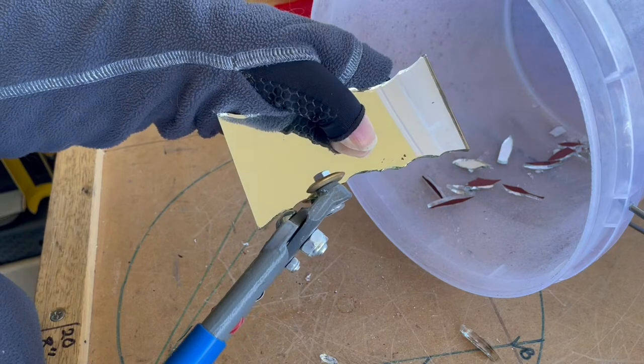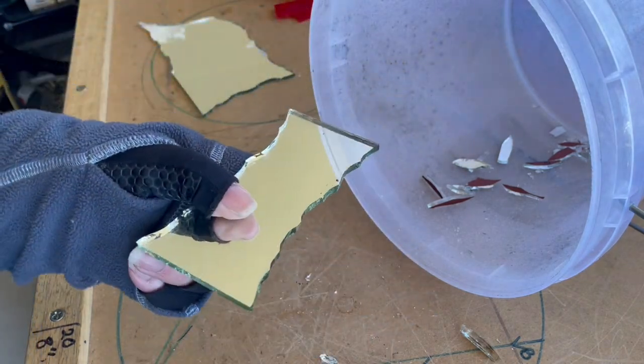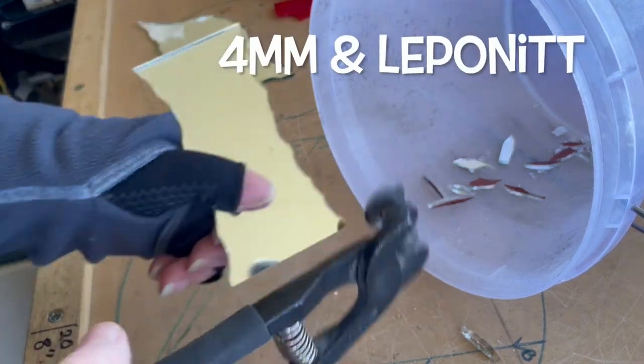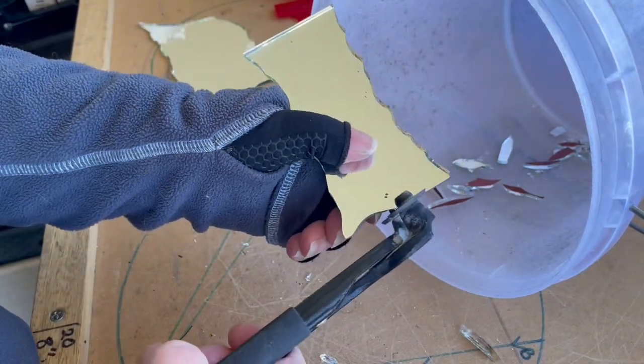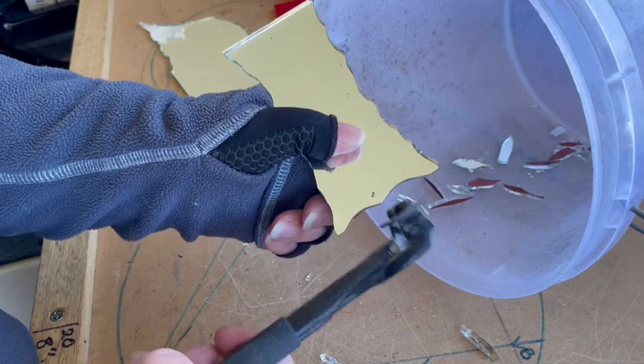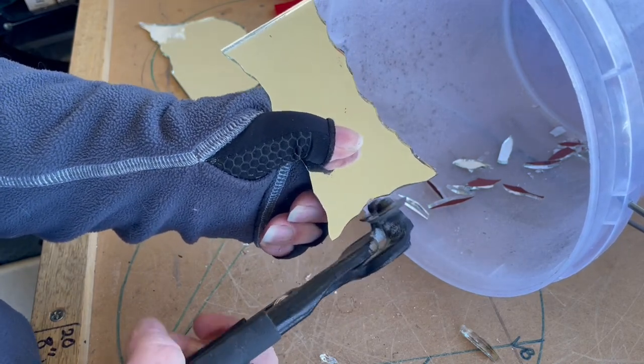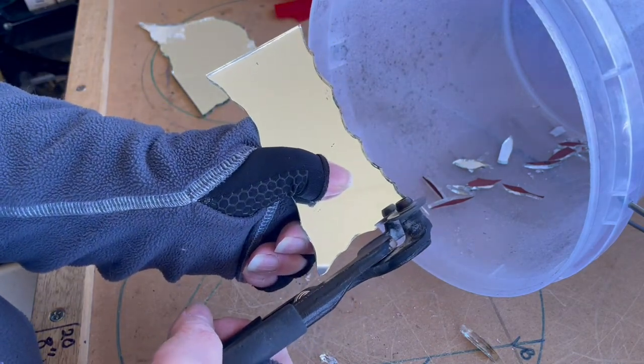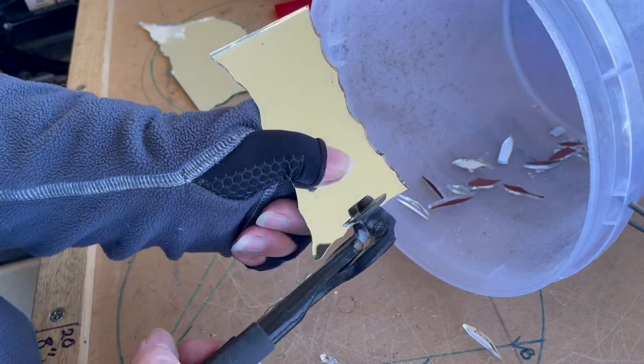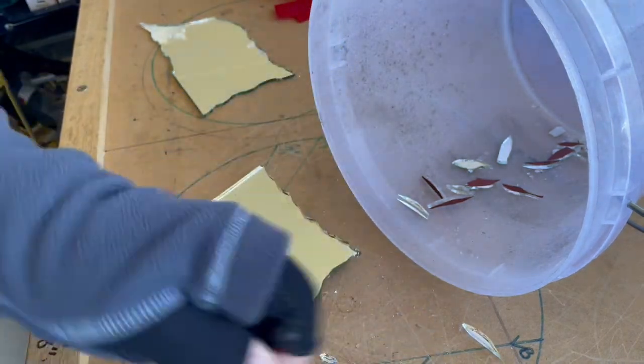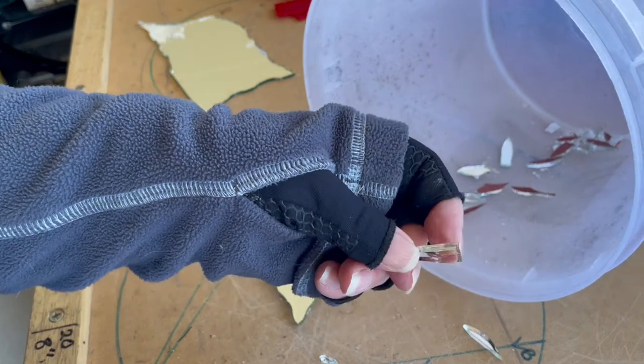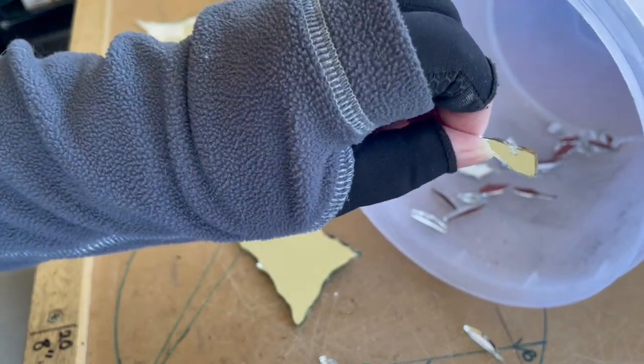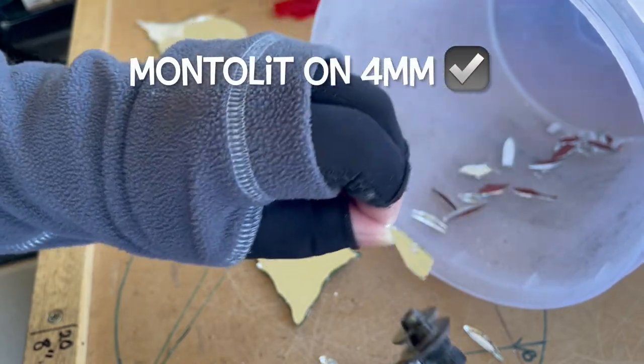Now what about the lippinets on the four mil? Equally good. I have to squeeze a little bit harder with the lippinets on four mil. Getting more blunt ends, so you need your good nippers on the four mil absolutely.